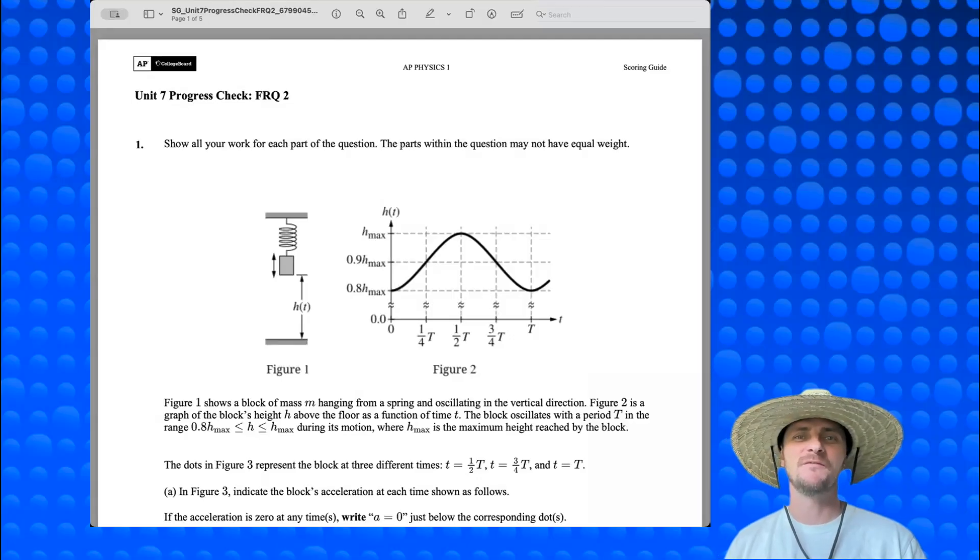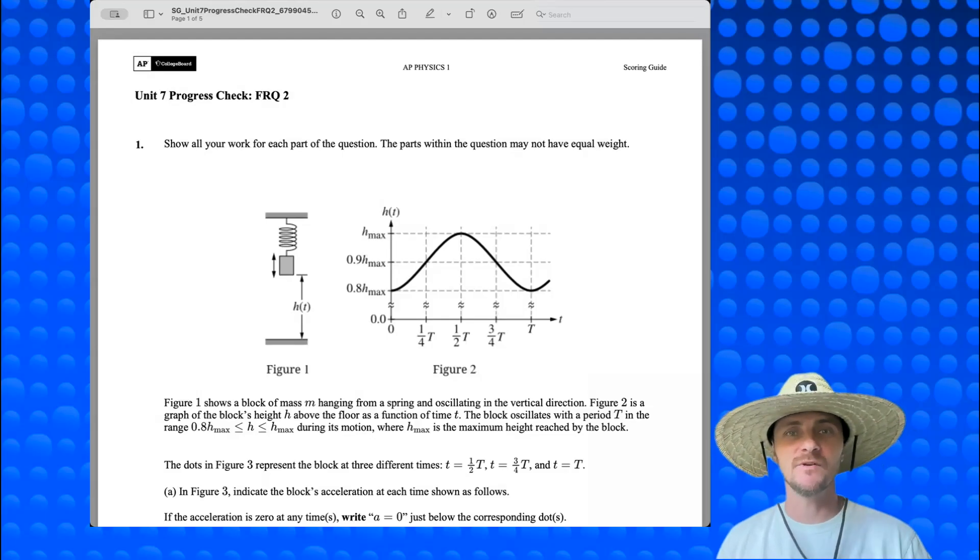Hey, Mr. Heinrich here. What's up AP Physics 1 students? We're looking at Unit 7 FRQ2 from the AP Classroom Progress Checks. Let's get after it.